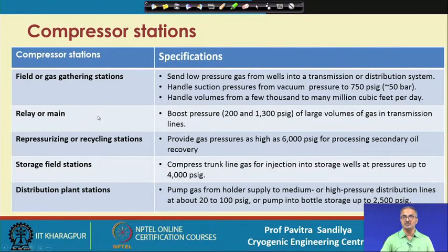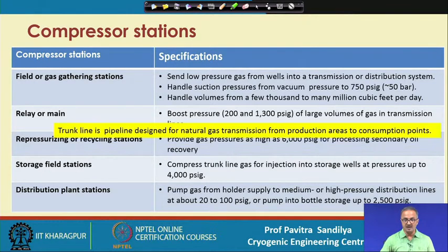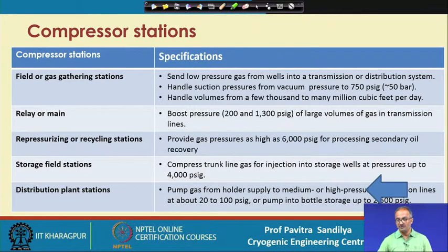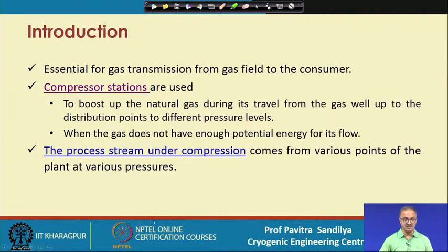Different stations are working at different levels of pressure. The trunk line means the pipeline designed for natural gas transmission from the production area to the consumption point. All these lines require different levels of pressure, so we need different types of compressors and compressor stations.